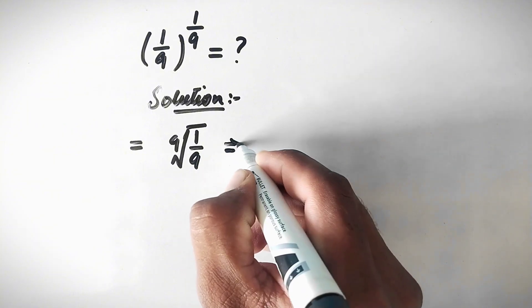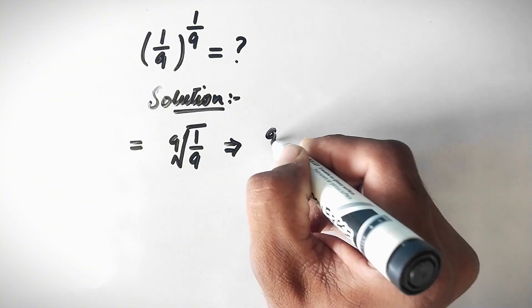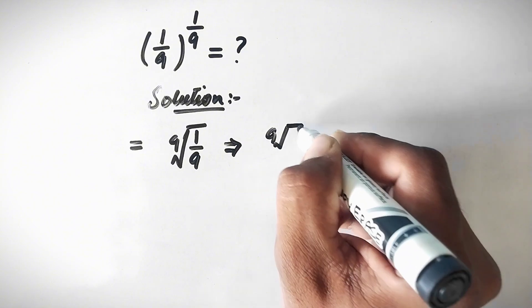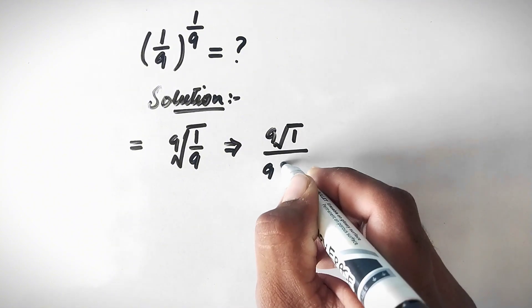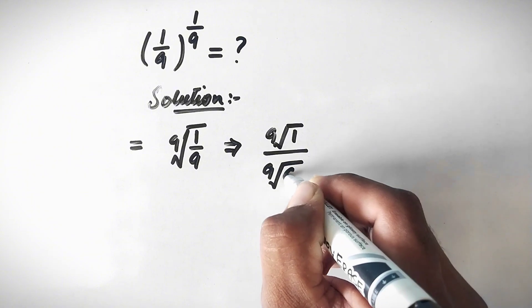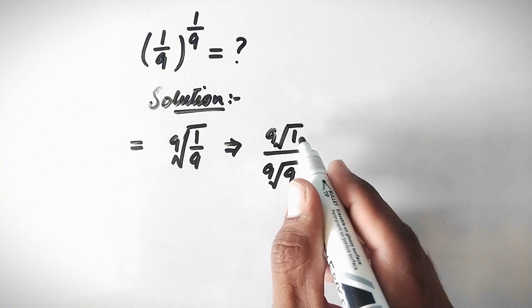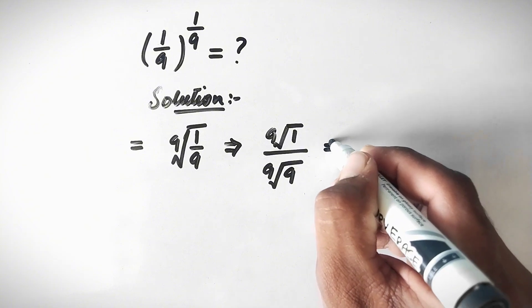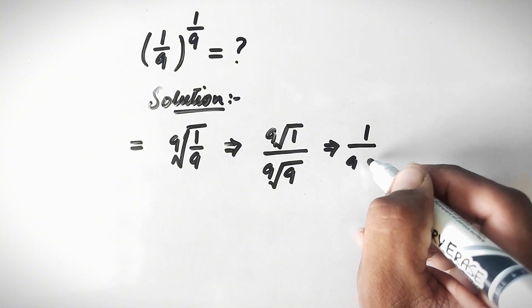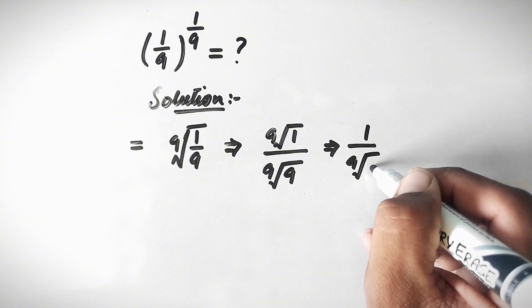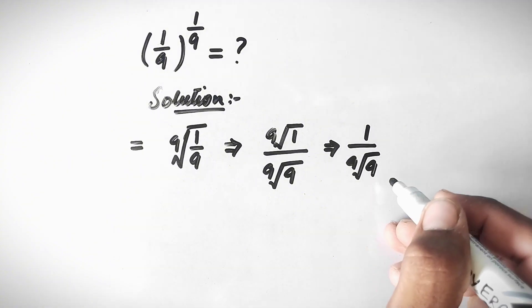We can write it with separate roots: the 9th root of 1 over the 9th root of 9. The 9th root of 1 equals 1, so we have 1 over the 9th root of 9.